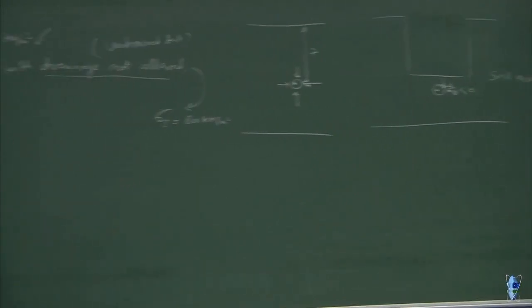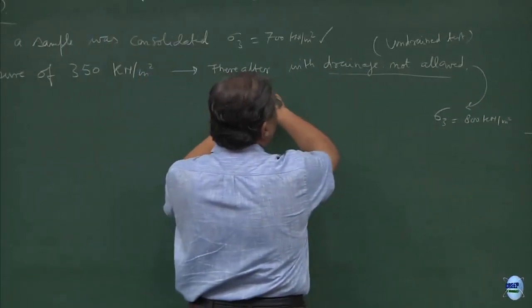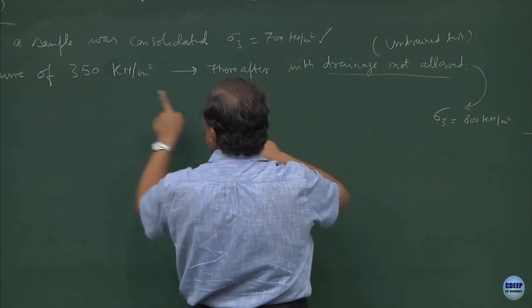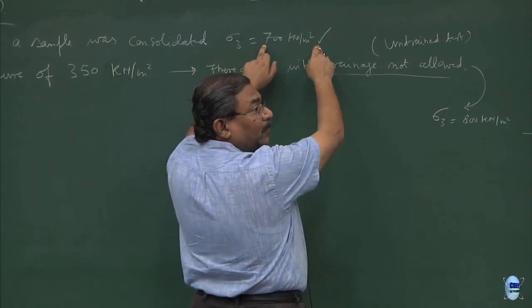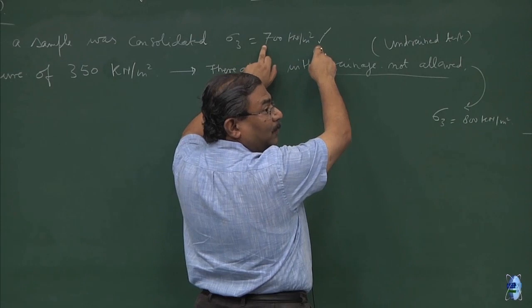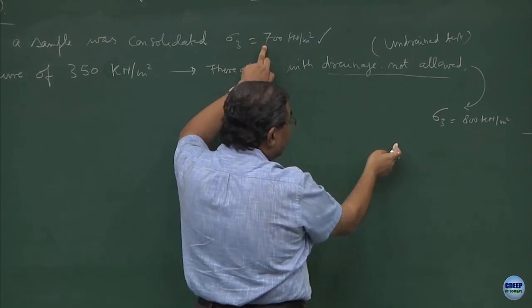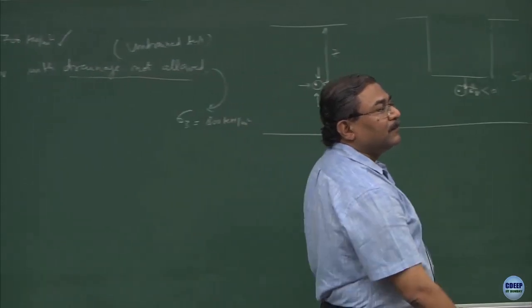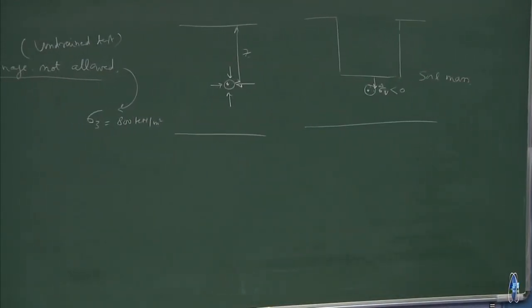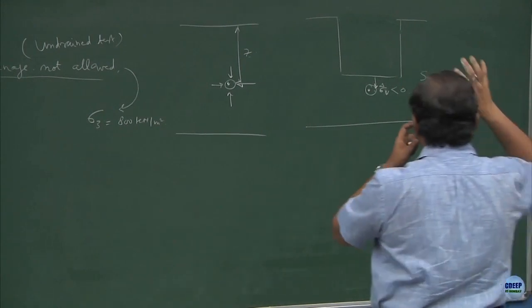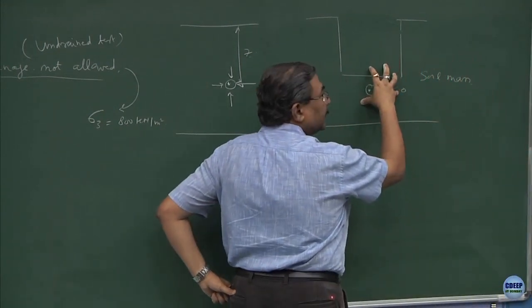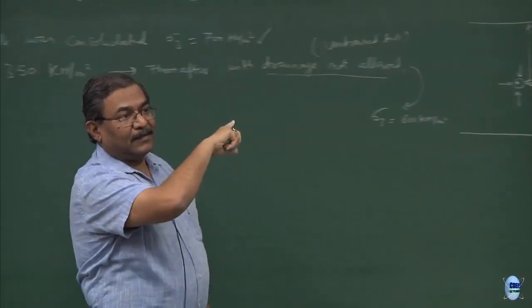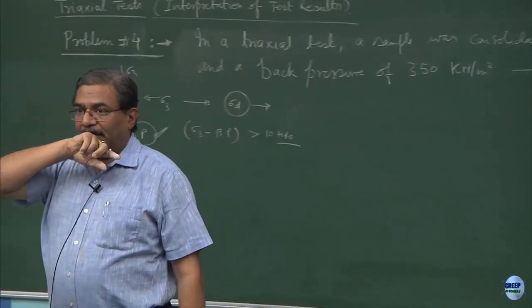I hope you can realize having done all these things rather than increasing sigma 3, I would have brought it down to value less than 700 also. If I really wanted to see the response of sample, I would have tested the sample at 500 kilo Newton per meter square sigma 3. You got it? What we are doing is simulating exactly what is happening in nature in our laboratories on the specimens.